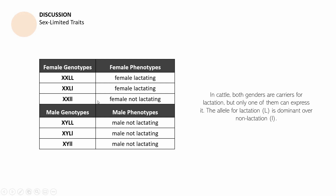For the male genotypes, even though the male XY has homozygous dominant or heterozygous alleles, since he is male, he will still not express lactation. This trait is only limited to a particular sex. In this case, lactation is limited to females — at least in the case of cattle. So in cattle, both genders are carriers for lactation, but only one of them can express it. The allele for lactation, uppercase L, is dominant over non-lactation, lowercase l.